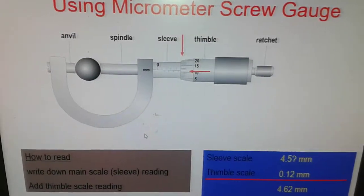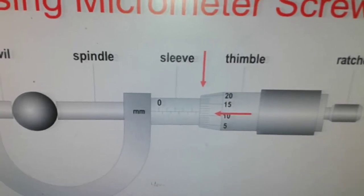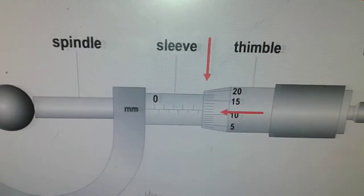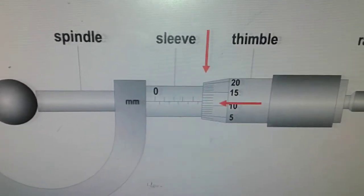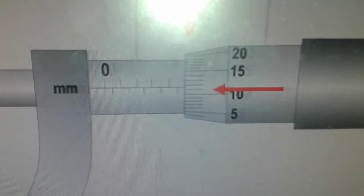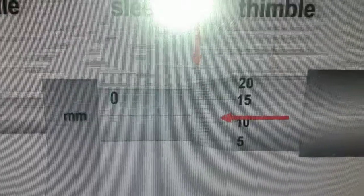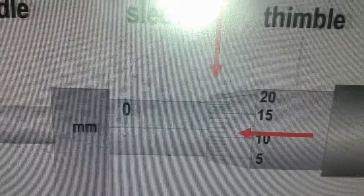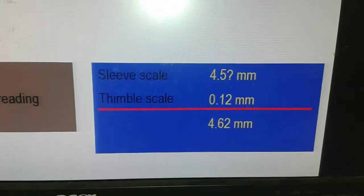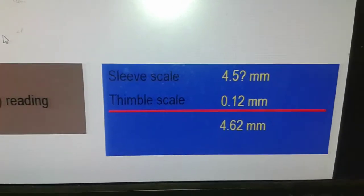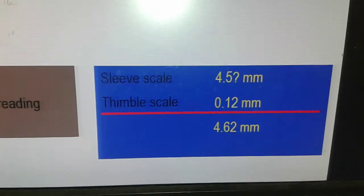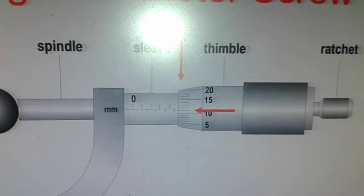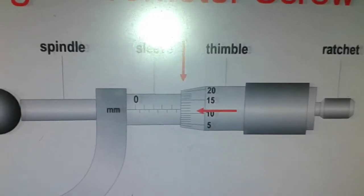In this case the sleeve scale reads 4.5 — counting the divisions: 0, 0.5, 1, 1.5, 2, 2.5, 3, 3.5, 4, 4.5 — that is the last division visible on the sleeve. Then you take the thimble reading where it meets the sleeve. Here it reads 12, so you put a decimal point in front giving 0.12. Adding the two: 4.5 plus 0.12 gives 4.62 millimeters.